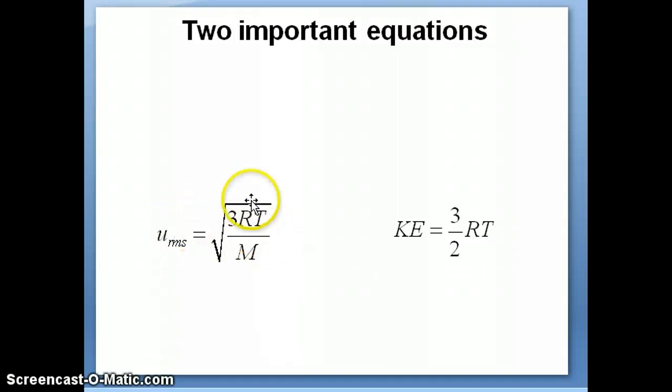But what this equation allows us to do is to use things like temperature, which is something we can measure. That's why it's called a macroscopic property. We can measure temperature, and we can relate that back to something that's a microscopic property, the speed of molecules.